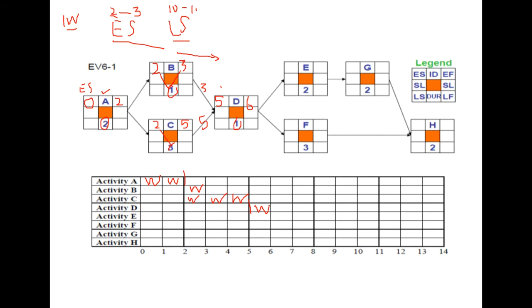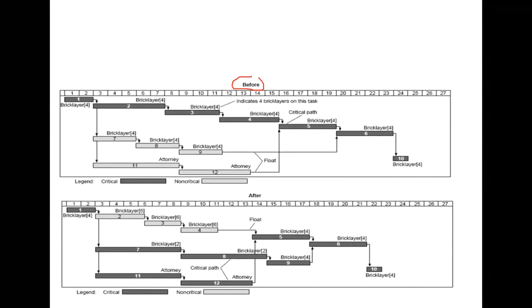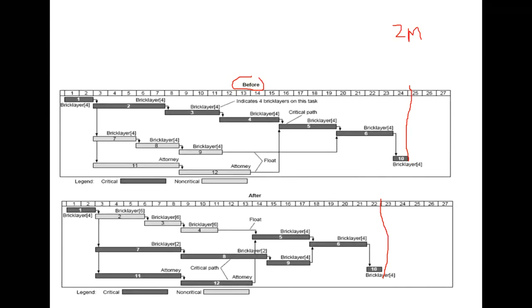You are suggested to do the problems in the first problem set to reinforce these concepts. We also discussed an example where a project manager saved two months: the before Gantt chart showed delivery in 24 months, and the after Gantt chart showed delivery in 22 months. Time is money — two months represents significant savings in staff salaries and indirect costs of keeping the site mobilized. The question was how these savings were achieved.